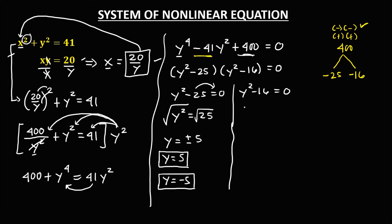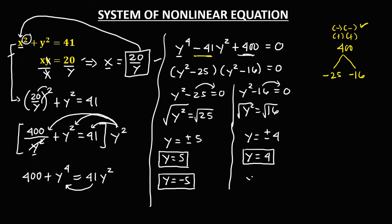For the other factor, y squared minus 16 equals 0: y squared equals 16, take the square root, so y equals positive or negative 4. Therefore y equals 4 and y equals negative 4. Note that we have four values for y because the degree of the exponent is 4.